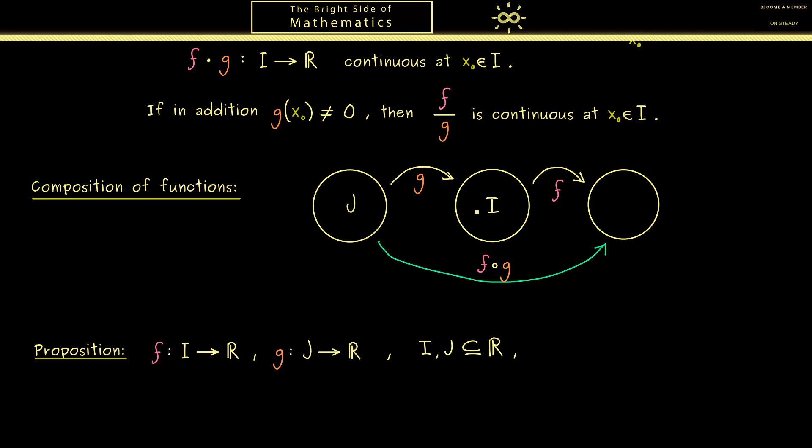Okay now what you should see here is that g maps into the real numbers. But I does not need to be the whole real number line. Therefore we need one restriction here such that the composition makes sense.